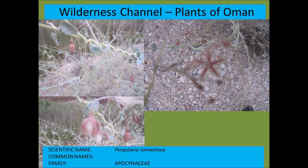Pergularia tomentosa of the Apocynaceae is a creeping plant. Most of these pictures were taken with a cell phone, and intense sunlight in Dhofar and all over Oman made it very difficult to see whether pictures were in focus. Forgive me if the pictures are not very clear.